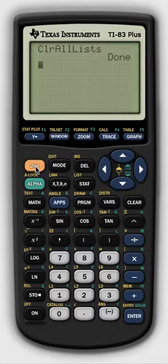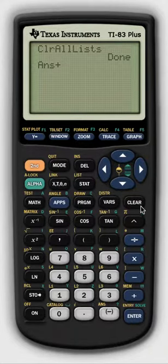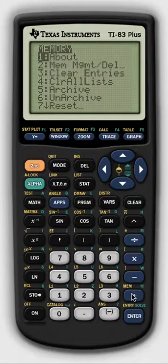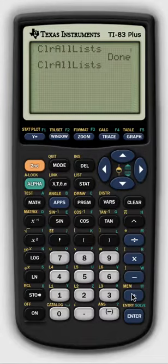So the first thing we want to do is clear our lists in memory in the calculator. Click second function and then the plus key. That's second function, mem for the plus key, and then we're going to choose item number four, which is clear all lists, and that'll execute a command that'll clear the memory.